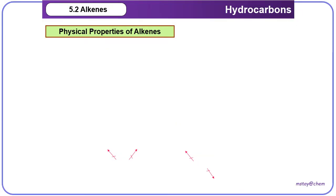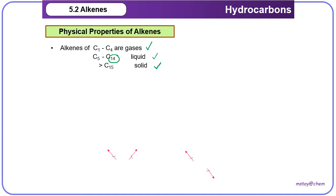Before we discuss the boiling point of alkene, we need to know the physical state of alkene. Alkenes with the number of carbons 1 to 4 will be gases, 5 to 14 are liquid, and above that will be solid. The more the number of carbons, the bigger the molecular size, and the higher the boiling point, because the physical state changes from gas to liquid to solid.